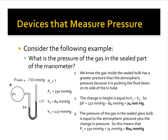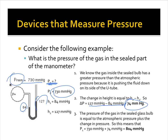Let's do an example. What is the pressure of a gas in the sealed part of the manometer? We're looking for pressure one. Pressure two comes from the room — the pressure of the room — and that is 730 millimeters mercury. The height inside is 84, outside is 127. If we take 127 minus 84, we get 43. So the pressure of the gas is 730 plus 43, and we get 773 — wait, the stated answer is 804 millimeters mercury for pressure one.